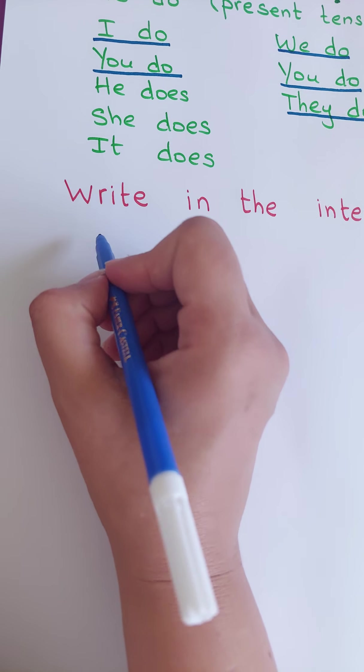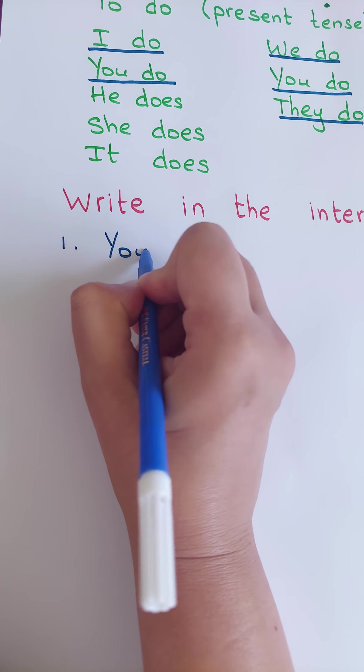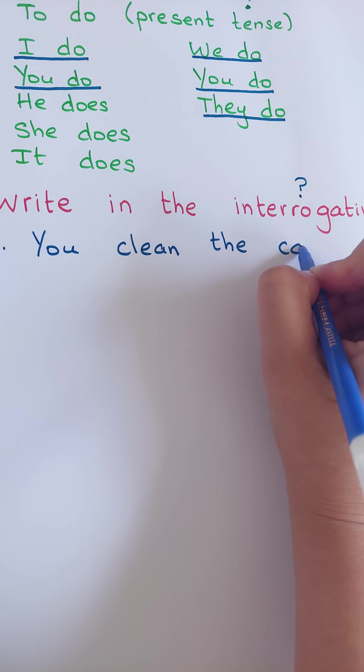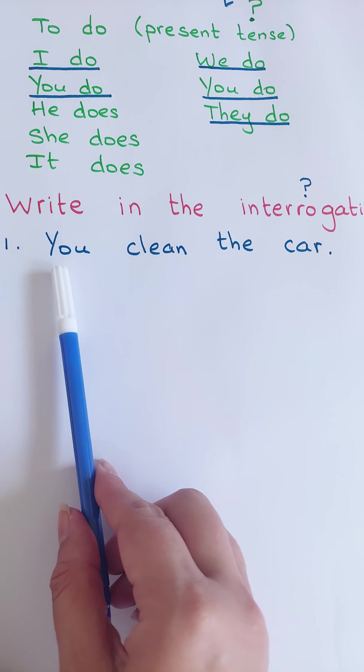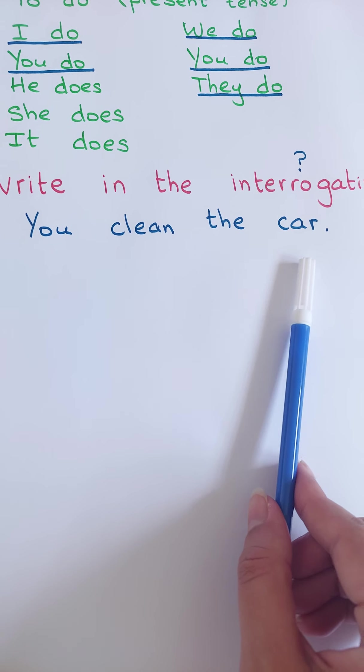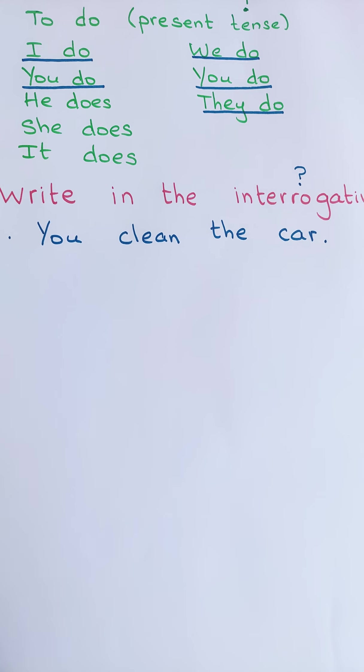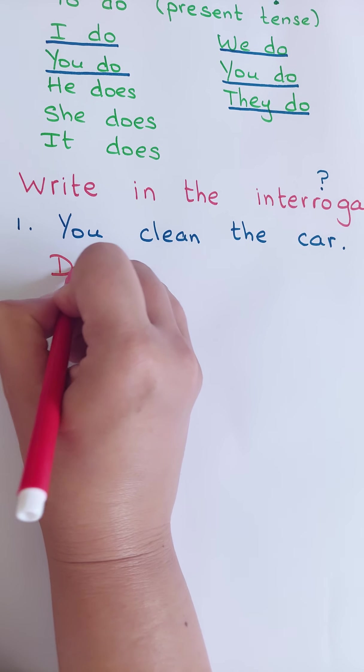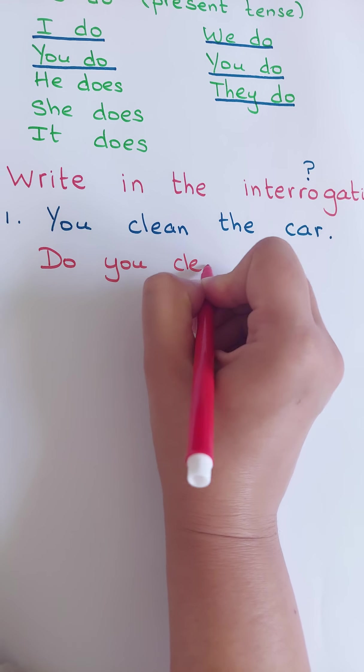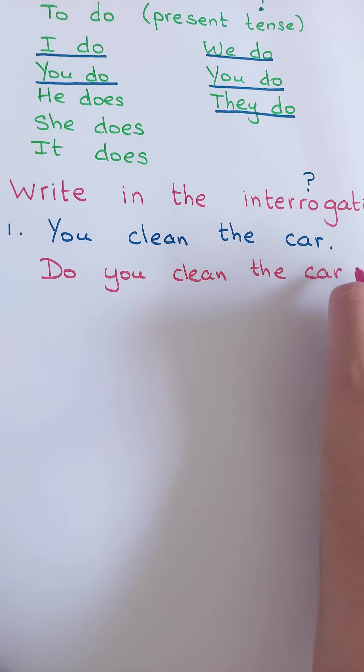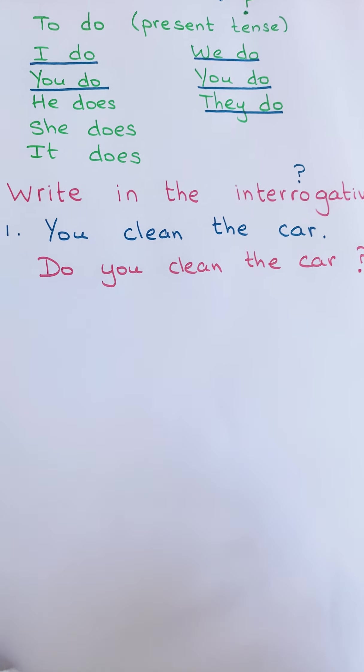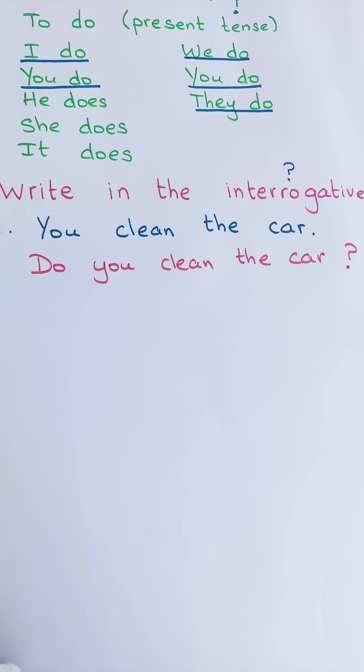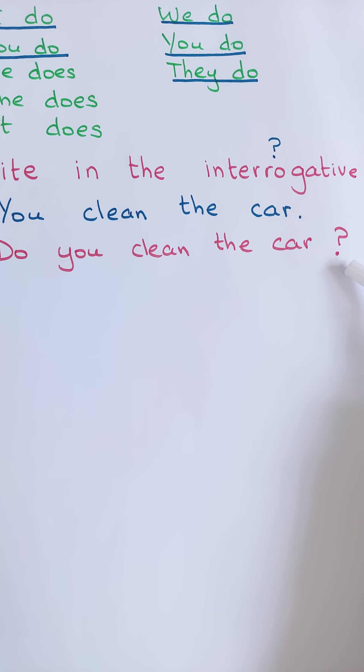Je vais te donner des exemples. Exemple. Premier exemple. Tu nettoies la voiture, on dit you clean the car. J'ai besoin de faire une question avec ça. Je vais dire Do you clean the car? Alors, qu'est-ce que j'ai fait là? Devant la phrase, j'ai mis do. D'accord? À la fin de la phrase, je mets le question mark.